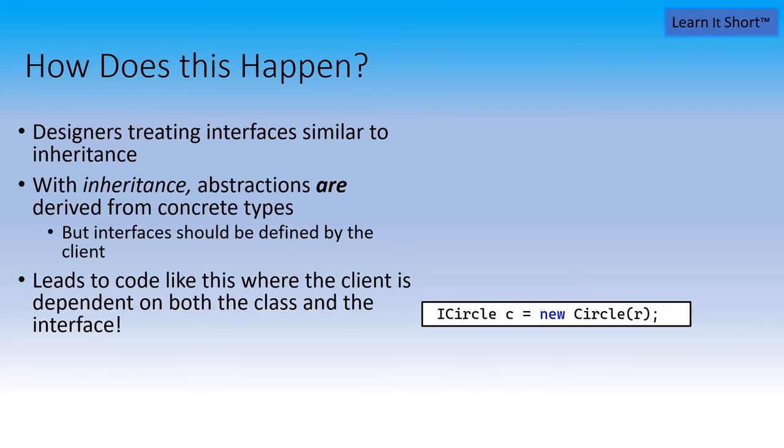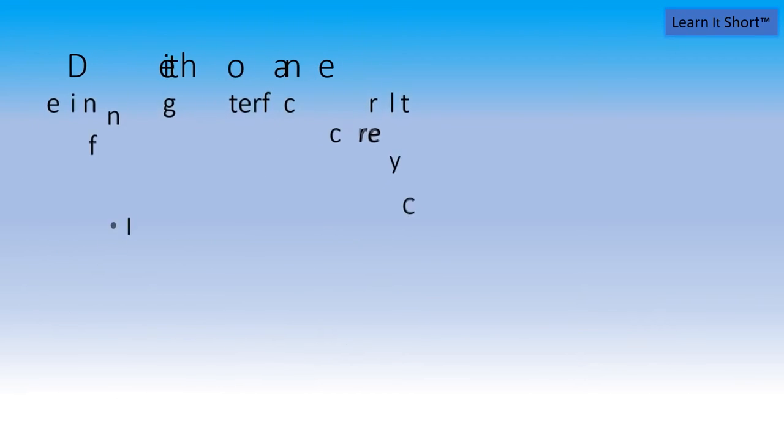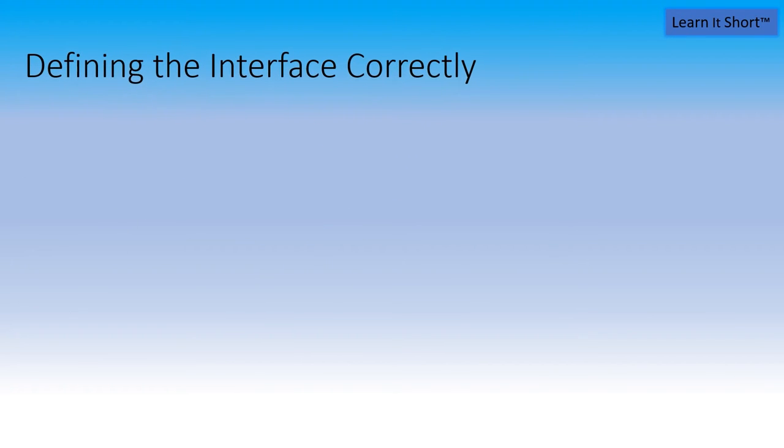When we create interfaces like we just did with the tool, it leads us to code like this, where the client is dependent on both the class and the interface. In an object oriented design, the client shouldn't depend on the library. So whoever's using the circles shouldn't have dependency on circle. In other words, it needs to be inverted, something we call dependency inversion. How do we define the interface correctly?